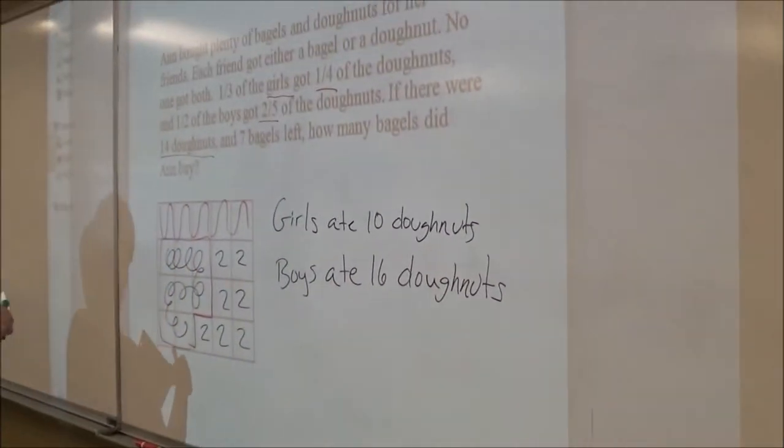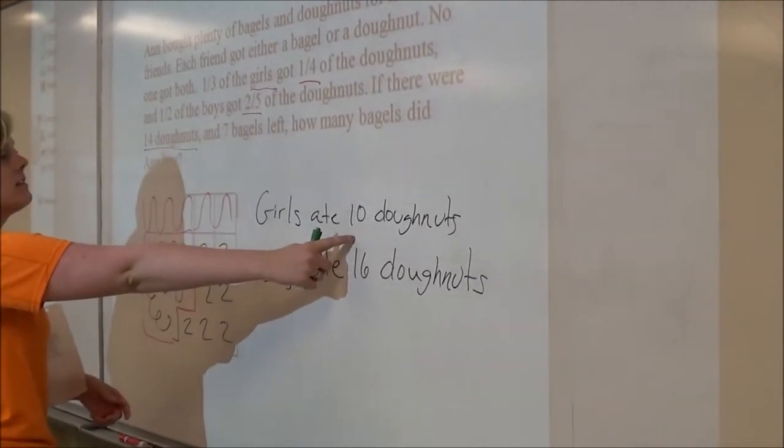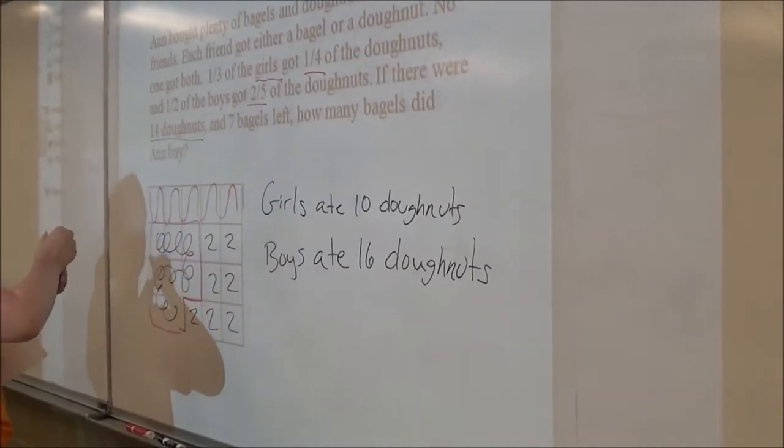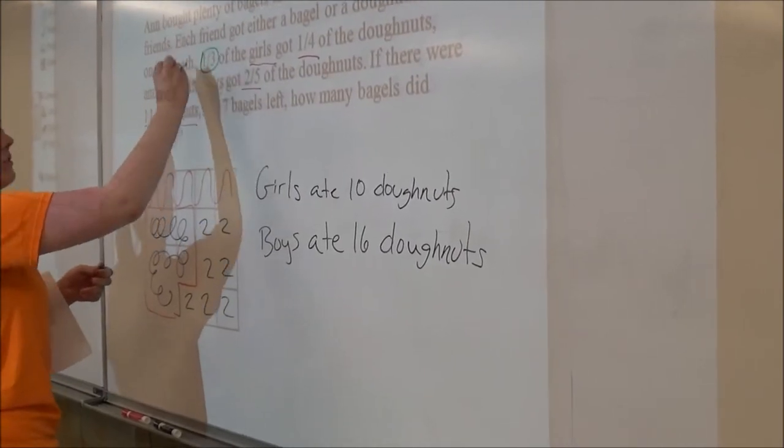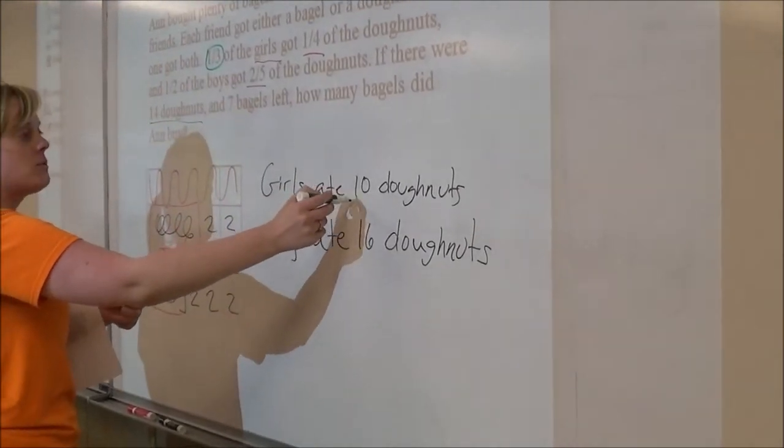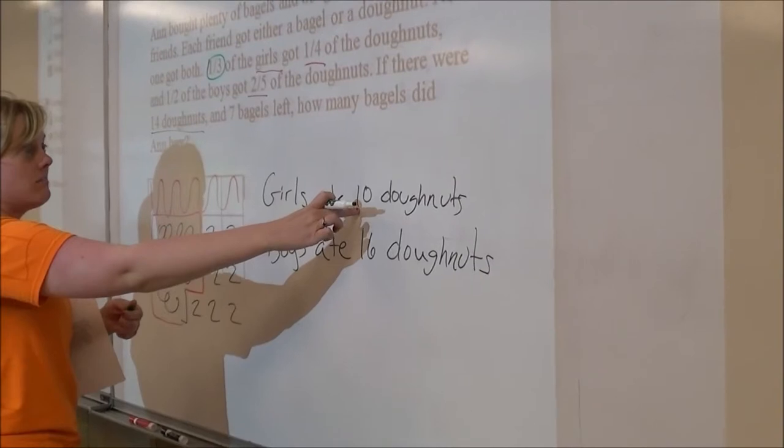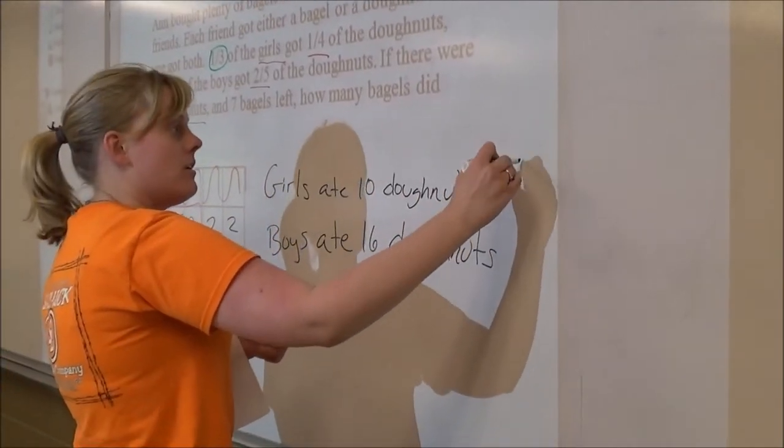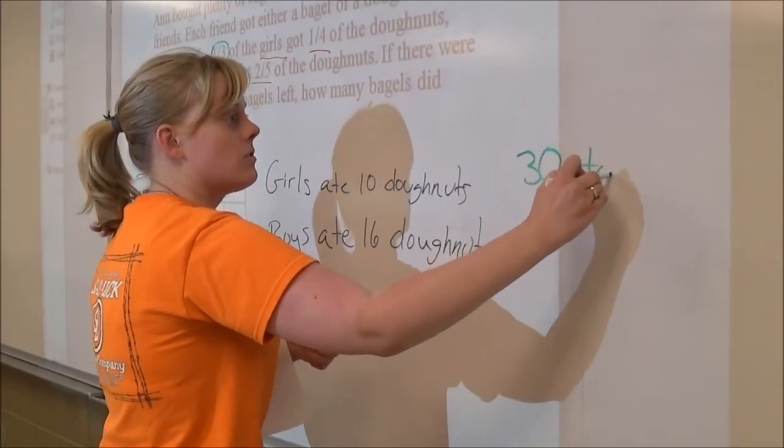We know that these girls that ate doughnuts were one third of all of the girls, so we know that this is one third. If 10 is one third, then 30 is the number of total girls.